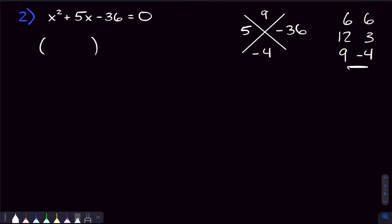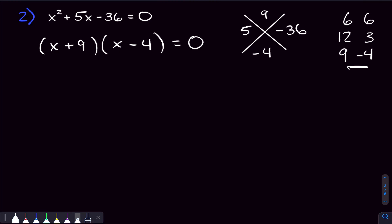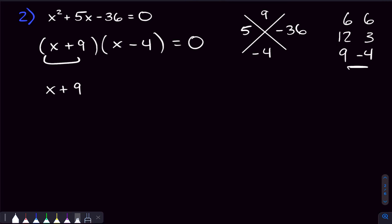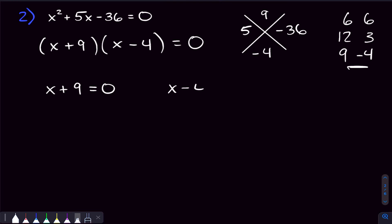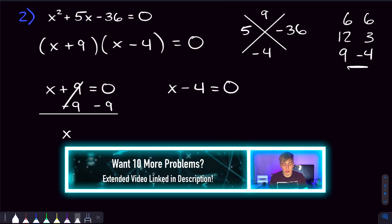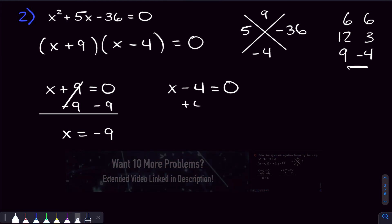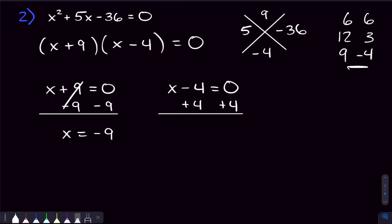We factor the quadratic by putting our x's in parentheses and placing the two numbers we found — so we get x plus nine times x minus four. To solve for x, either factor could be zero. Setting x plus nine equal to zero, we subtract nine on both sides to get x equals negative nine. Setting x minus four equal to zero, we add four on both sides to get x equals four. Those are our two solutions.